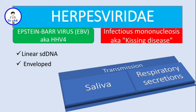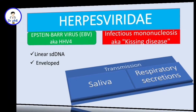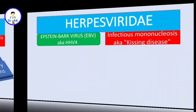On transmission, this virus is mainly transmitted through saliva — that's why it's called the kissing disease — and sometimes it can be transmitted through respiratory secretions.